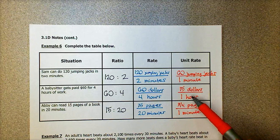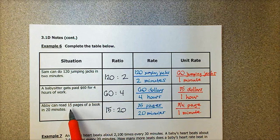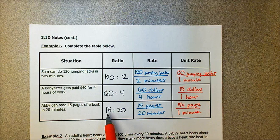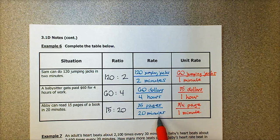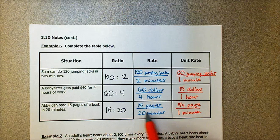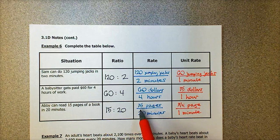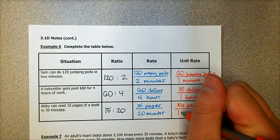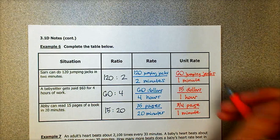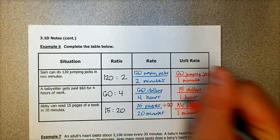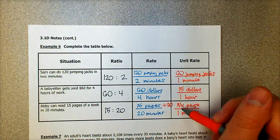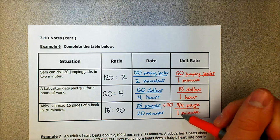The bottom row — be careful with this one. Abby can read 15 pages of a book in 20 minutes. The ratio is 15 to 20, and the rate is 15 pages per every 20 minutes. To get the unit rate, divide top and bottom by the denominator, 20. Many people are tempted to reduce 15 over 20 to three-fourths, which is correct, but remember the denominator must be one. 15 divided by 20 gives three-fourths, so Abby reads three-fourths of a page per every one minute.